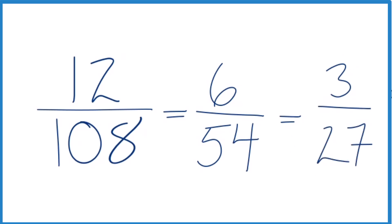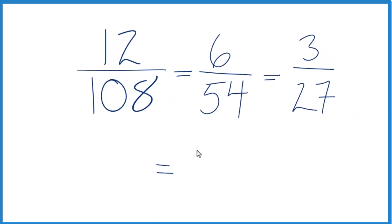We can actually reduce 3/27, though, because 3 goes into 27 nine times. So we can divide the numerator by 3 and the denominator by 3. 3 divided by 3, that's 1. 27 divided by 3 is 9. So we end up with 1/9.